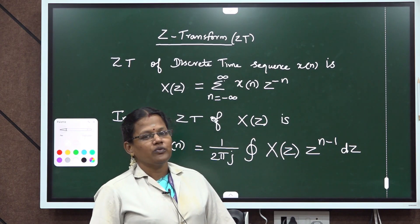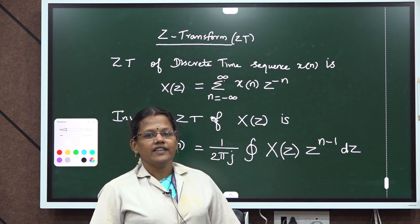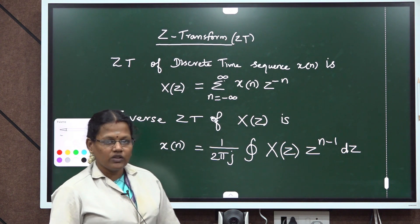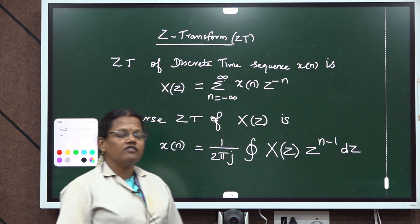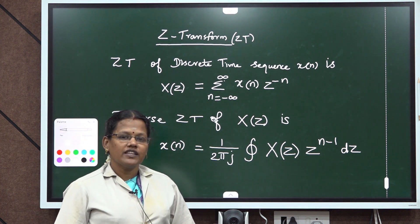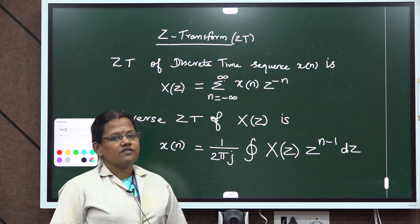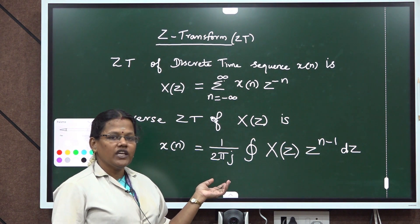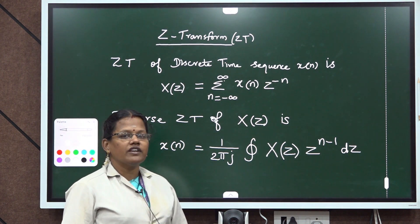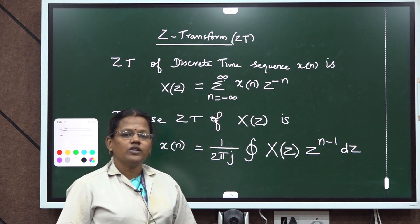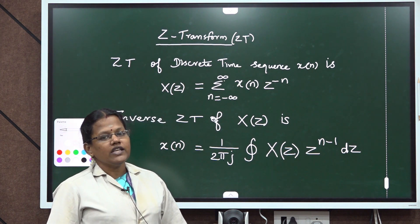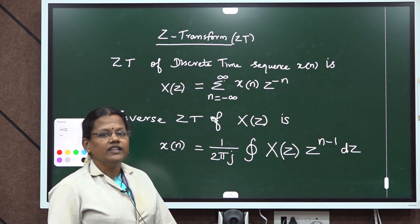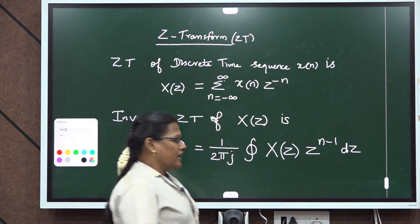Good afternoon students. Now we are going to see about the Z-transform. The formula is: X(z) is equal to summation n equal to minus infinity to infinity x(n) z power minus n. Its inverse Z-transform is given by x(n) is equal to 1 by 2πj closed integral X(z) z power n minus 1 dz. If the question asks for a Z-transform pair, you have to write both equations — the transform as well as the inverse Z-transform.